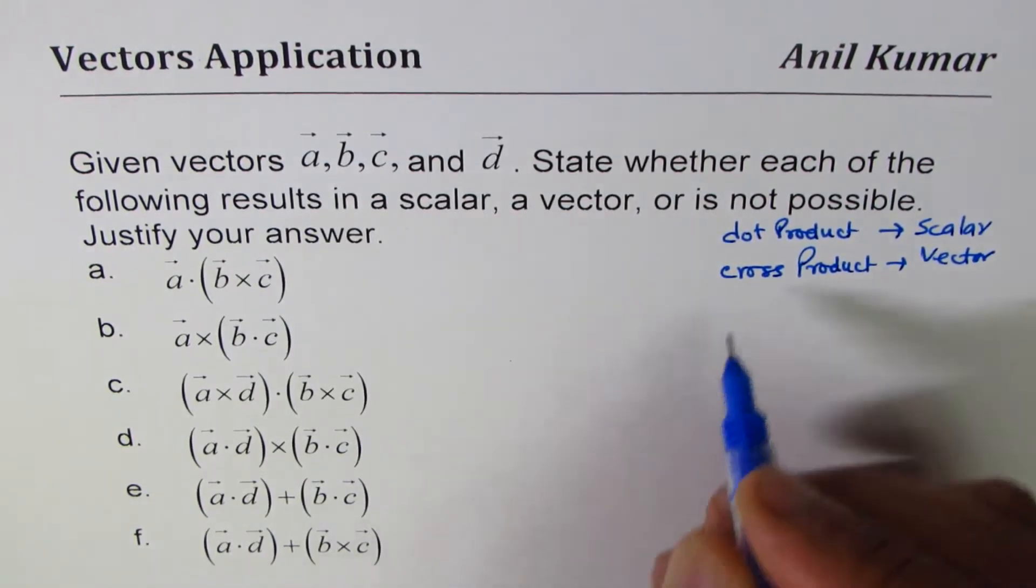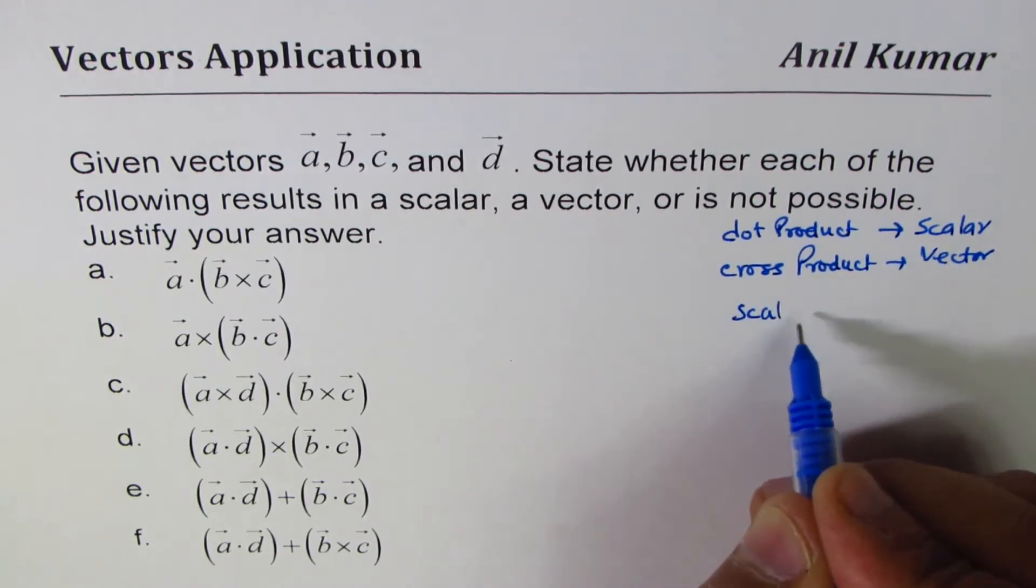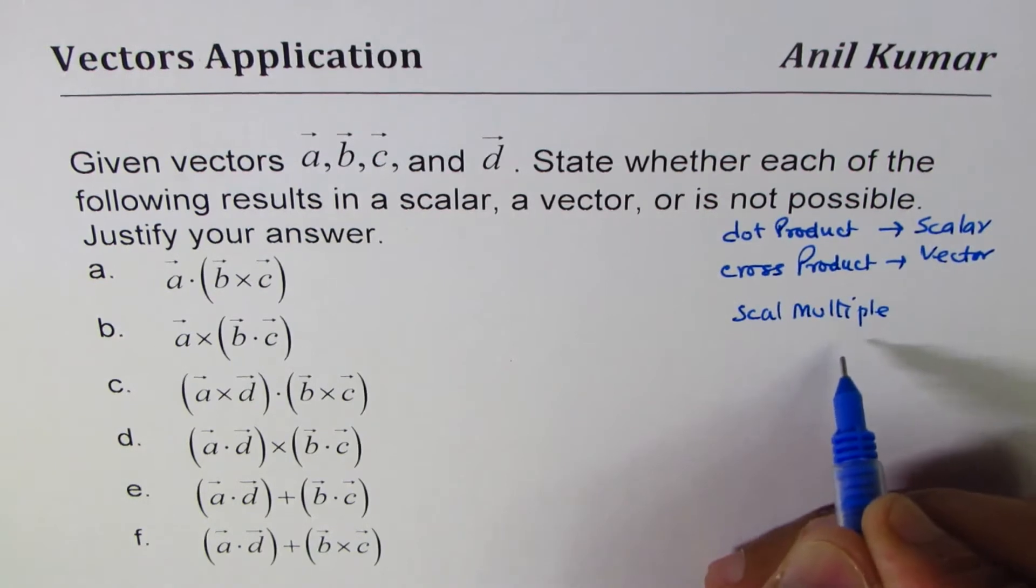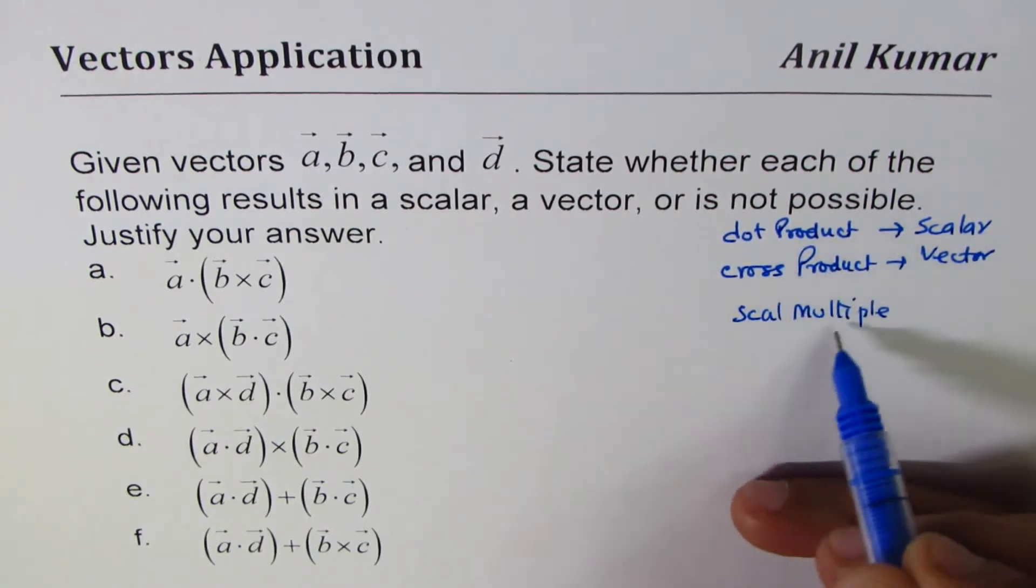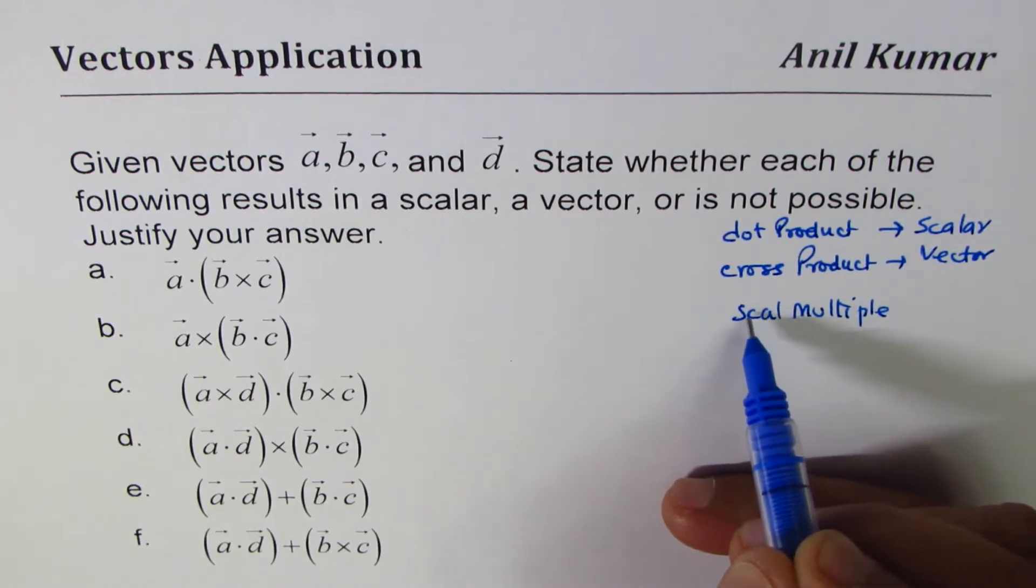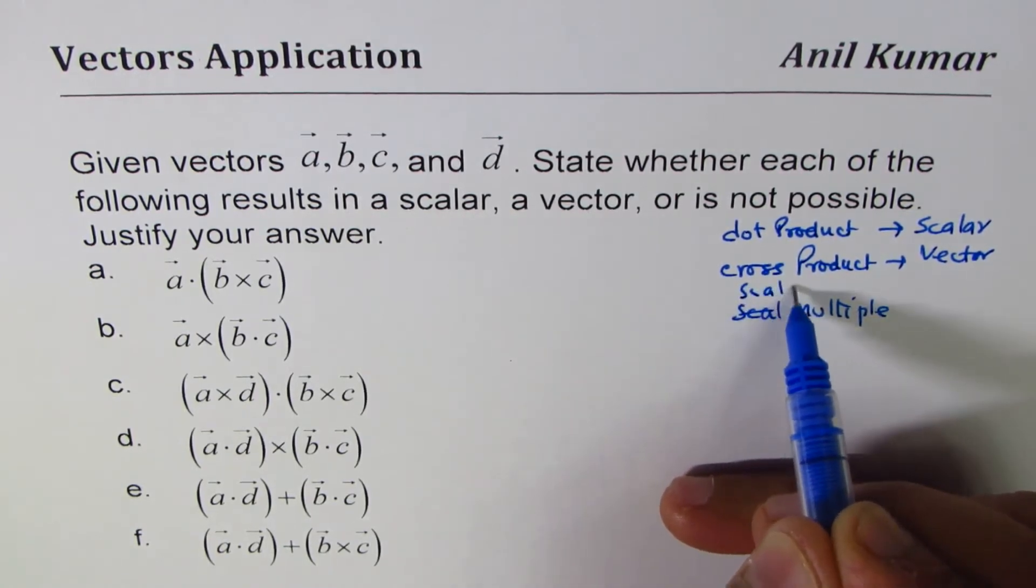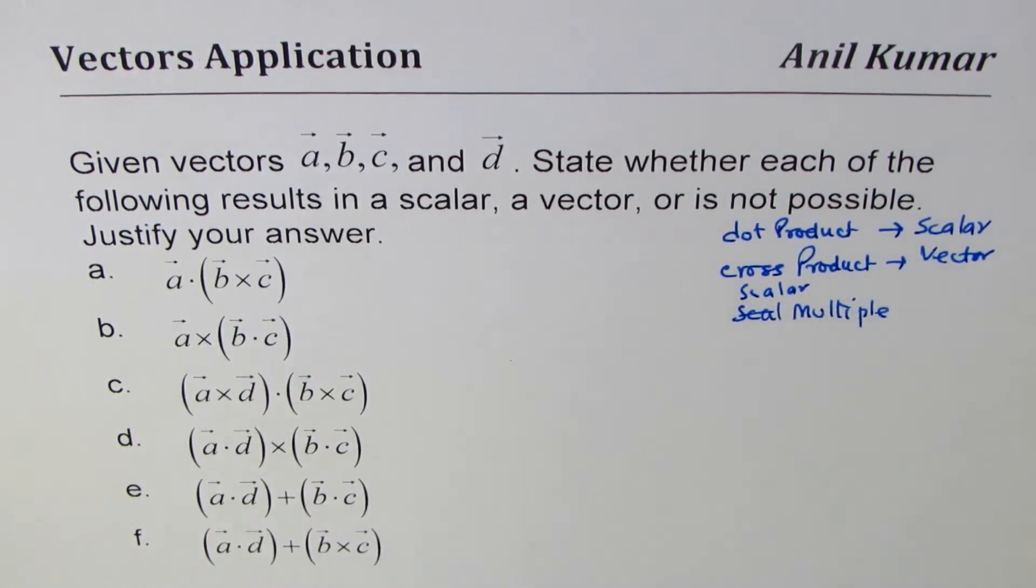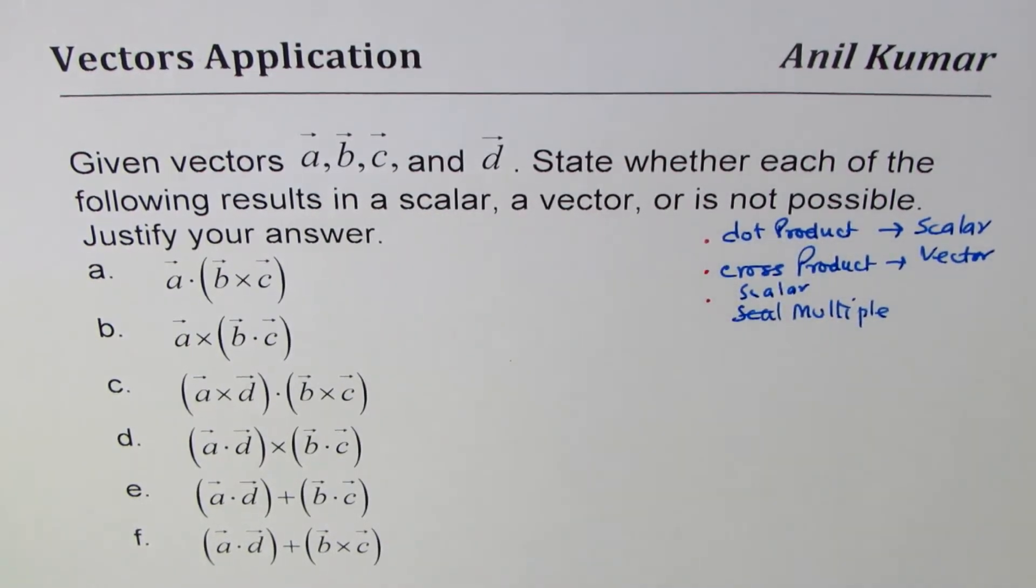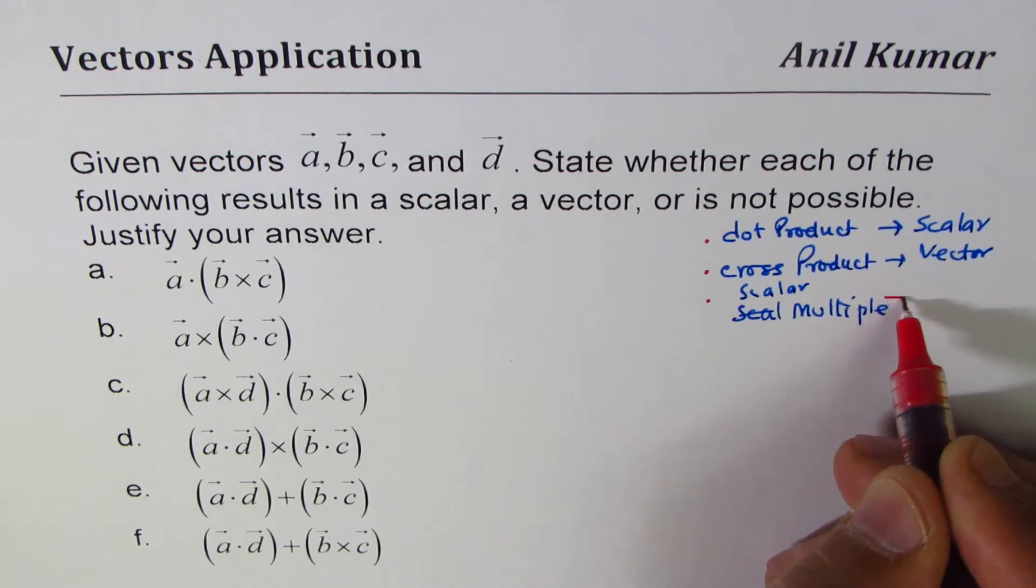In vectors you could have scalar multiples, that is possible. So as far as these product type operations are concerned, we should have scalar multiples. So basically we have these three operations, and a scalar multiple will always give you a vector.